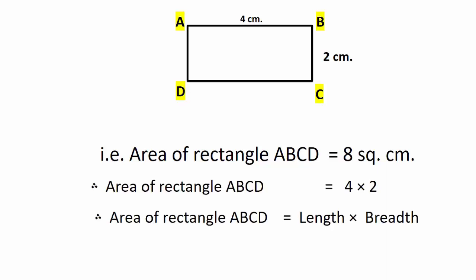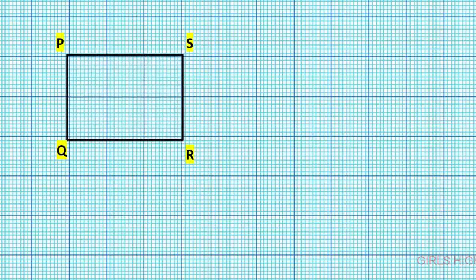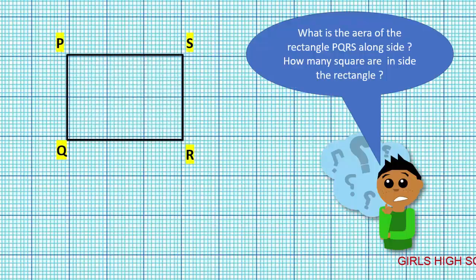Area of rectangle ABCD is equal to four multiplied by two. Hence, area of rectangle ABCD is equal to length multiplied by breadth. Let us see another example — rectangle PQRS. What is the area of rectangle PQRS?